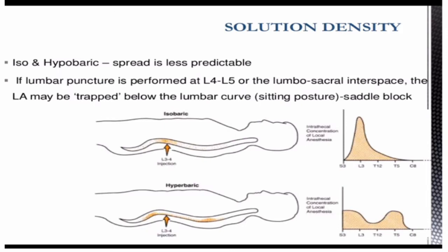Another consideration is solution density — whether an isobaric or hypobaric solution is being used. If lumbar puncture is performed at L4-L5 or the lumbosacral interspace, the local anesthetic may be trapped below the lumbar curve, especially in the sitting posture, causing a so-called shadow block.